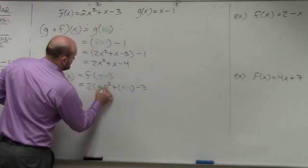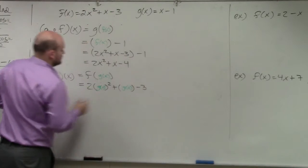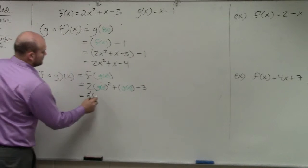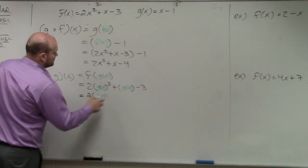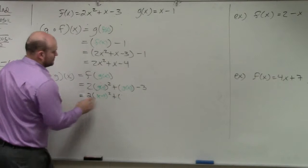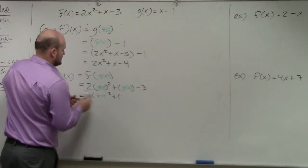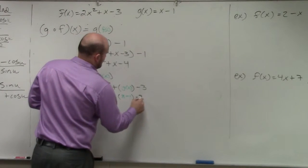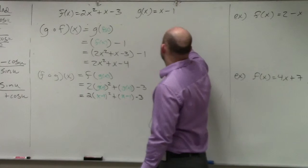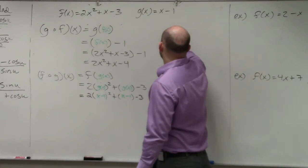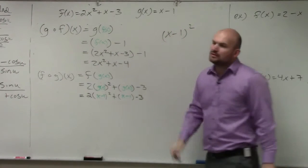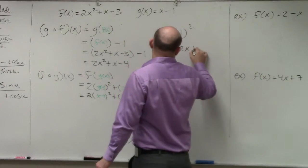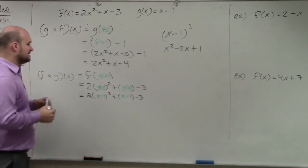Watch. So now we need to make sure we can multiply this, x minus 1 squared. You guys should know how to multiply a binomial squared. You guys could use FOIL, the box method, but that's going to be your answer.